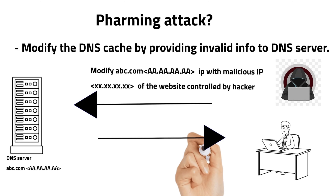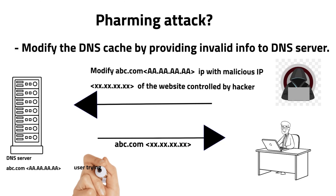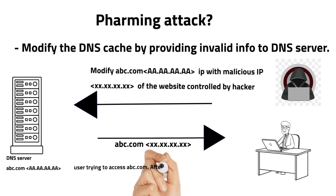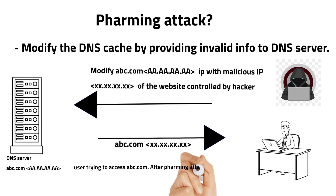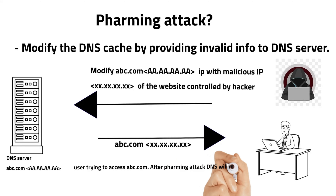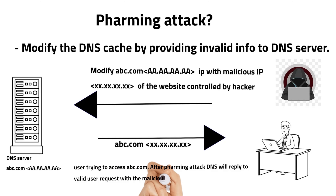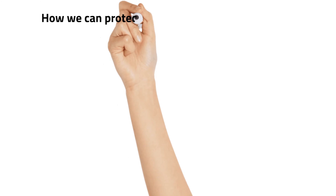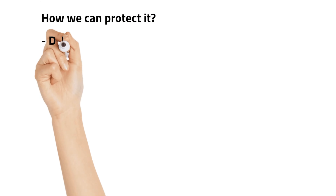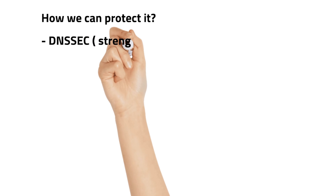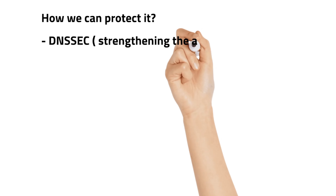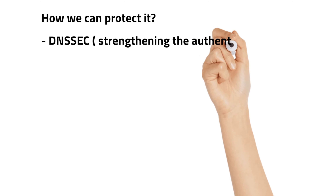After a pharming attack, if the user tries to access abc.com, the DNS will reply to the valid user request with the malicious information. To protect against this, we use DNSSEC. We have to strengthen the authentication in DNS using digital signatures.